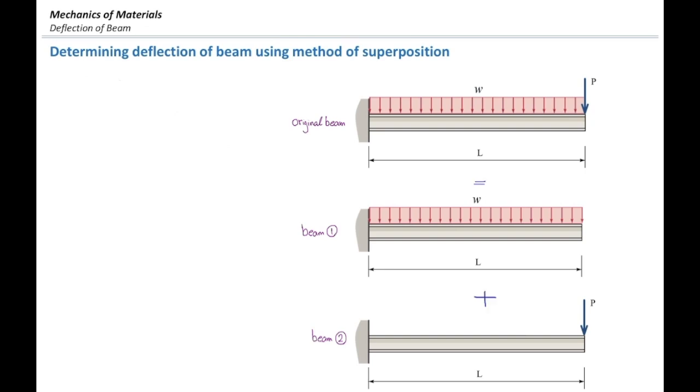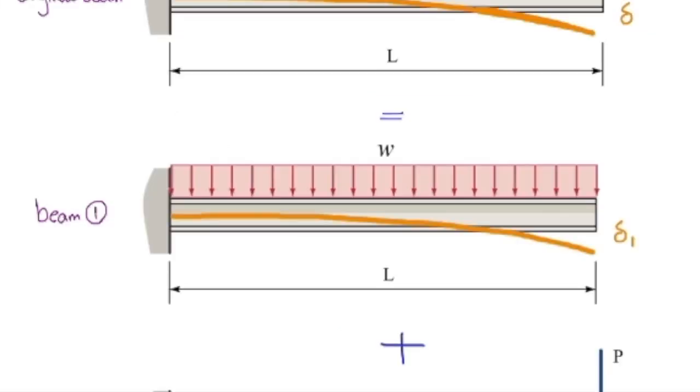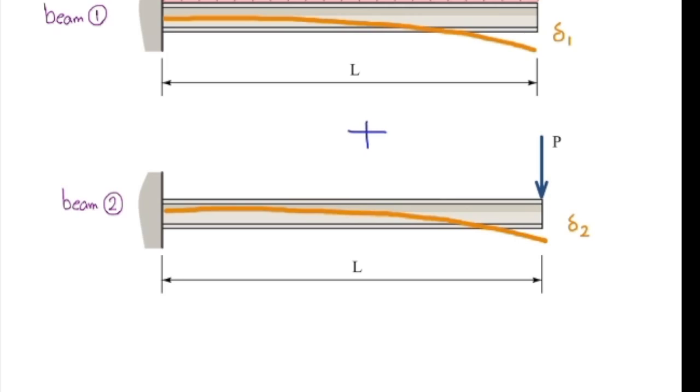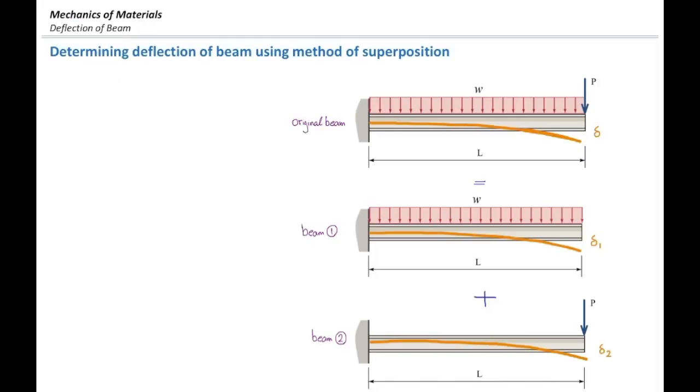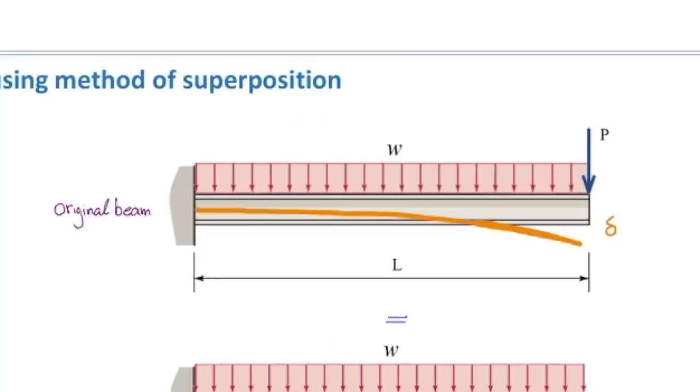And then, if I determine deformation in beam number one, call it delta one, and deformation in beam number two, call it delta two, I can determine how much is the deformation in the original beam.